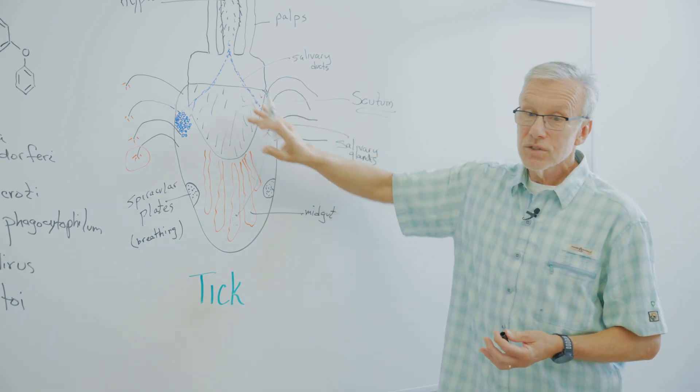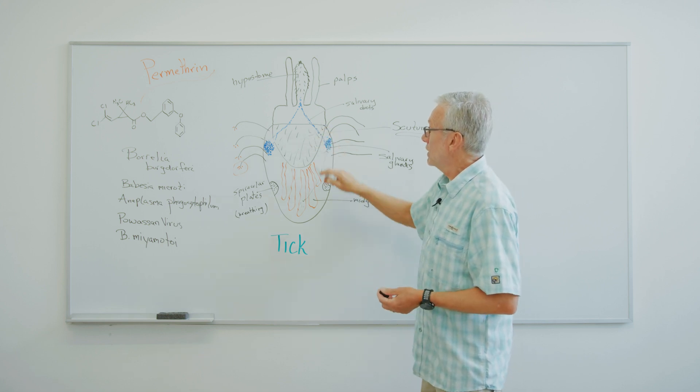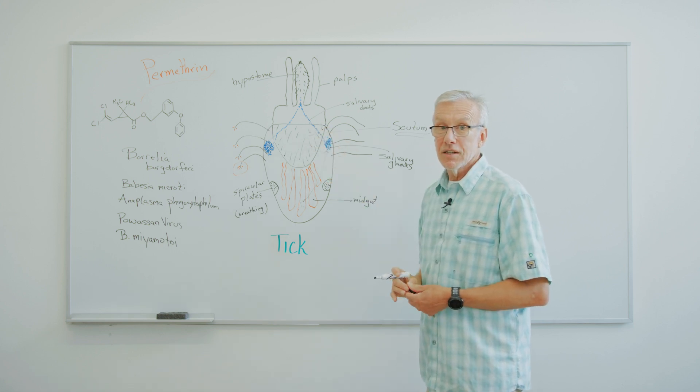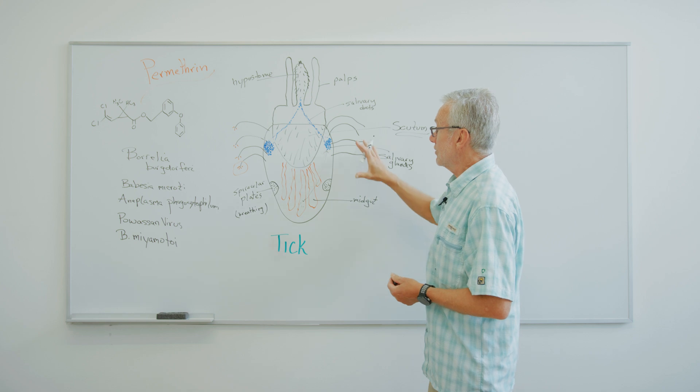If it's a plain scutum, that's one type of tick. If it has pigment on it, it's another type of a tick. So it's really important to know some of these simple features.